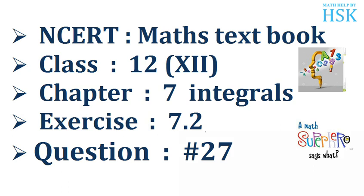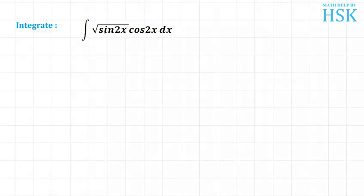Question number 27, NCERT Section 7.2, Chapter 7. In this question, we have to integrate √(sin2x) × cos(2x).